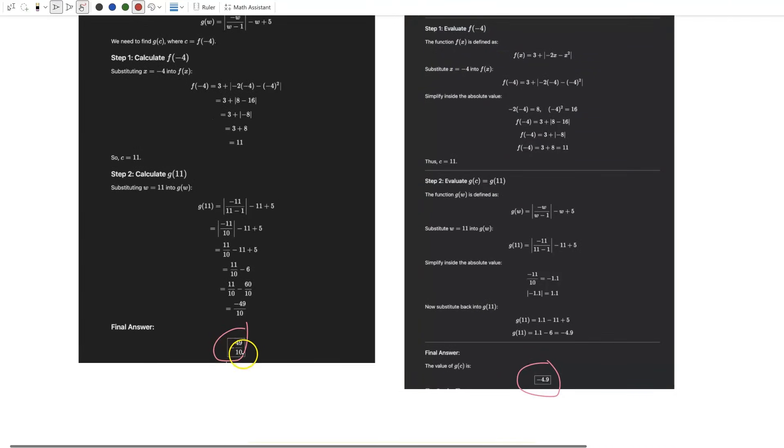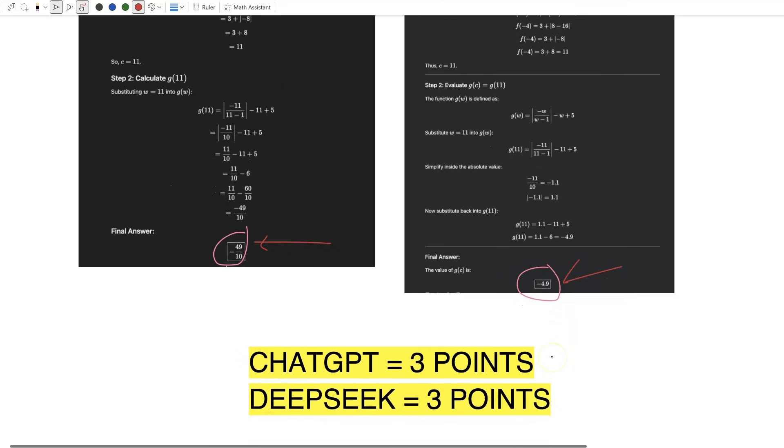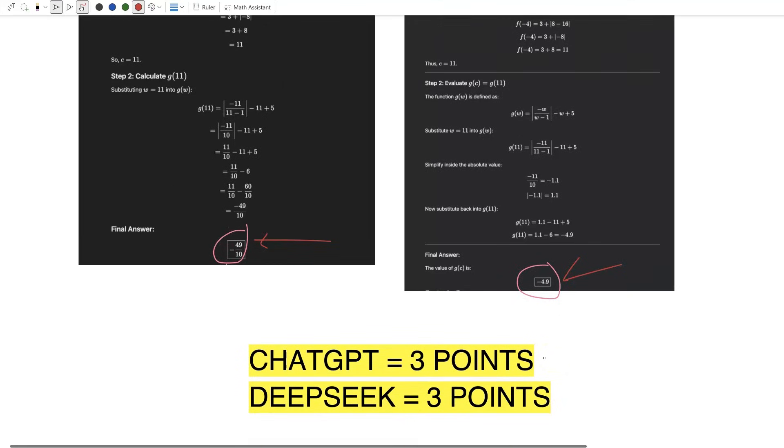Negative 49 over 10 is the same as negative 4.9, and that is the correct answer. So now they are tied at the end of the math section. What a surprise, that's kind of crazy. If you think about it, DeepSeek is trained on the same data as ChatGPT.